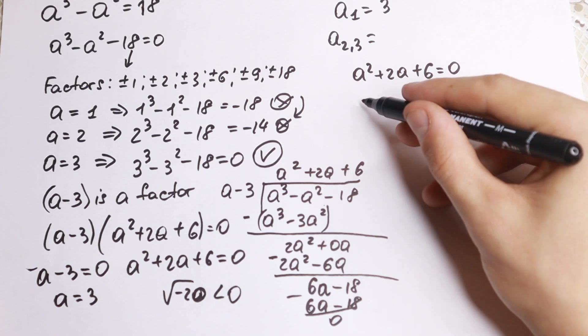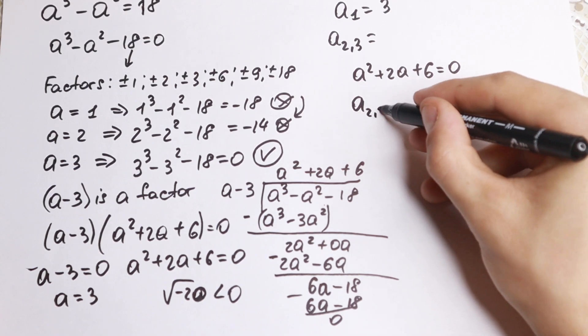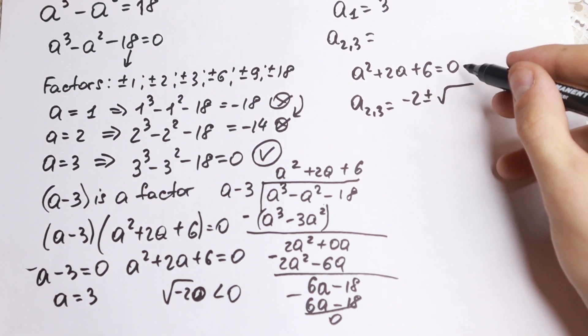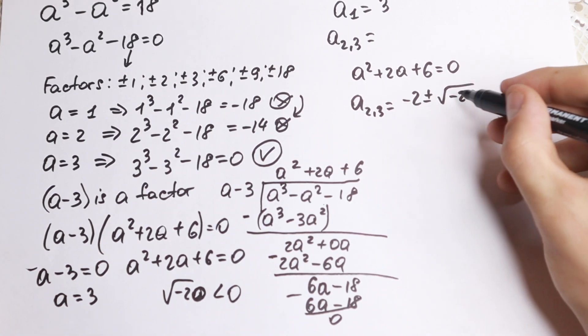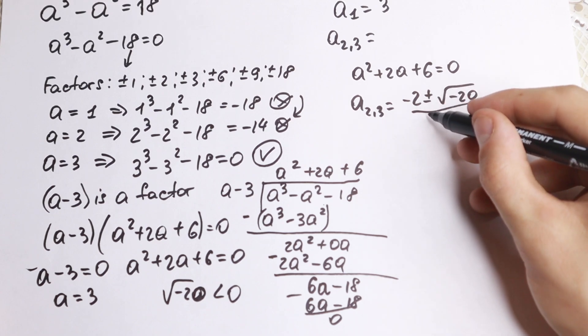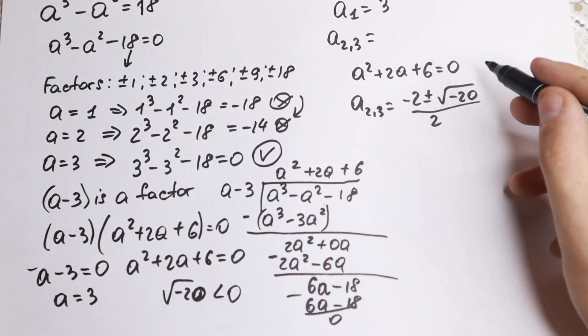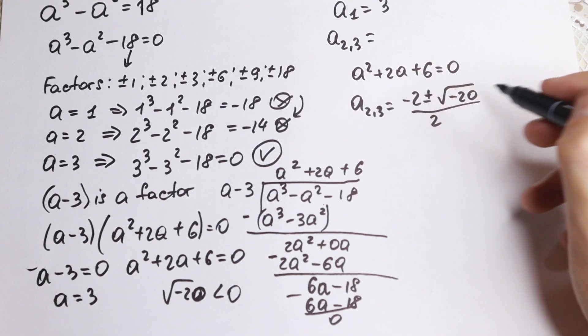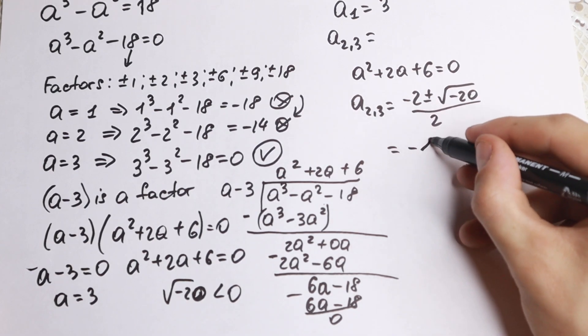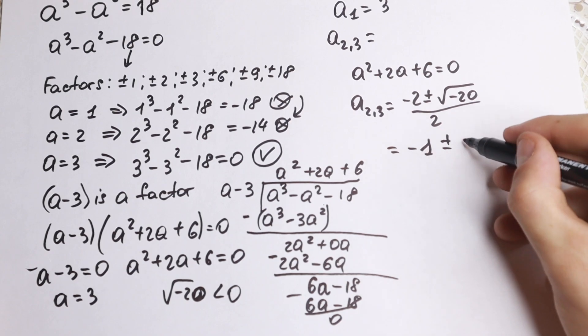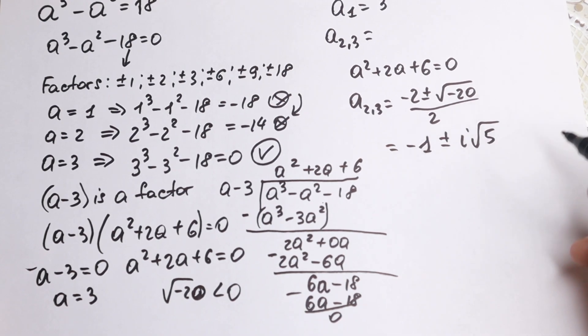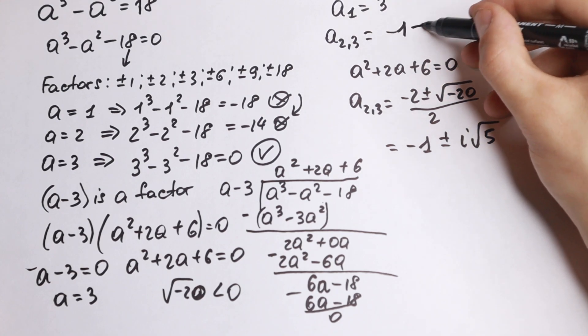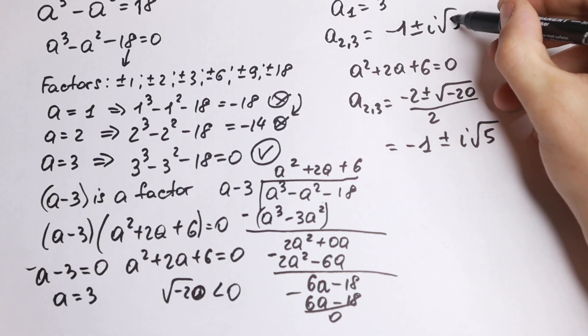So how can we find it? Of course, using our classic formula. a₂,₃ = (-2 ± √(-20))/2. Factoring from here 4, we will have 2 right here. Dividing these, we will have -1 ± i√5. And as a result, we write this solution -1 ± i√5.